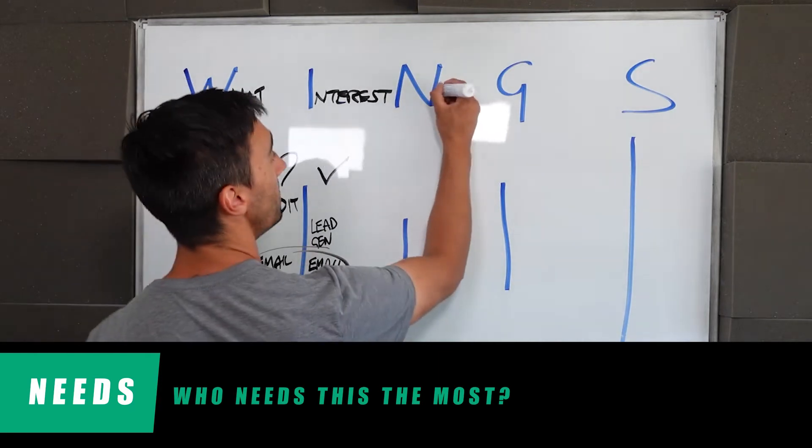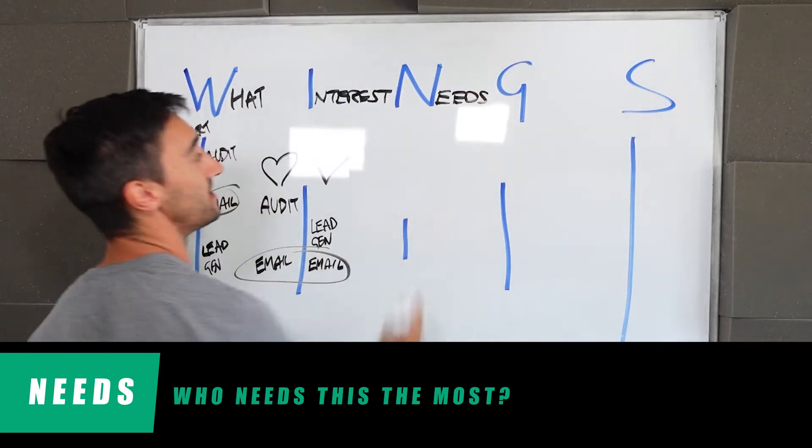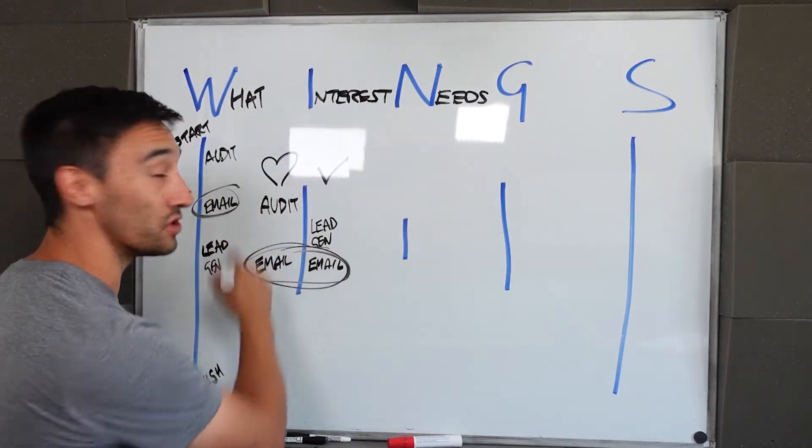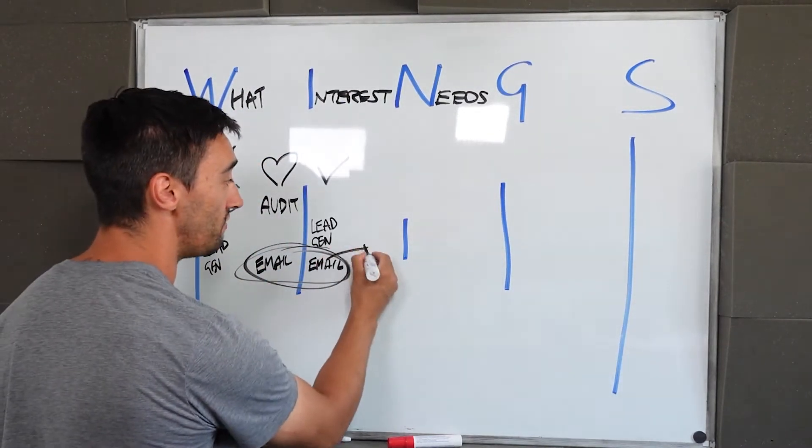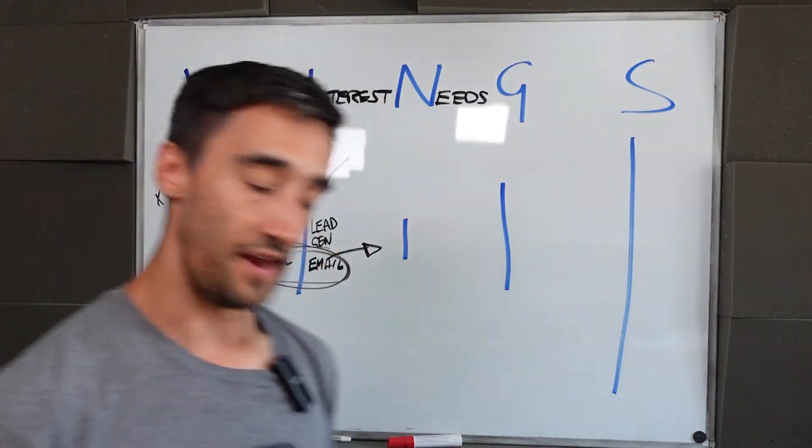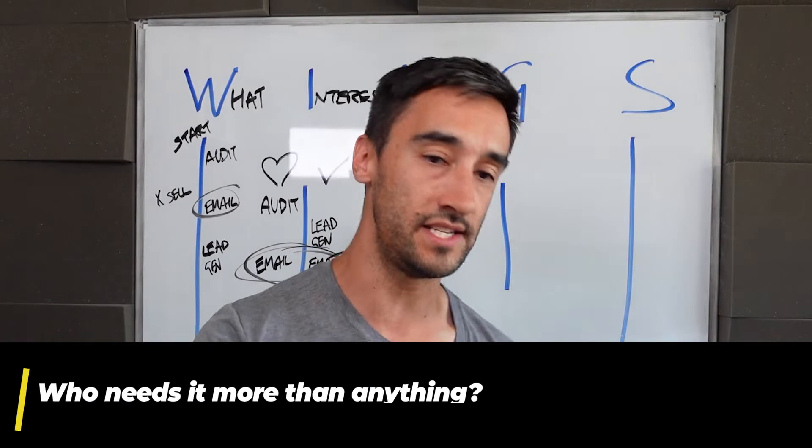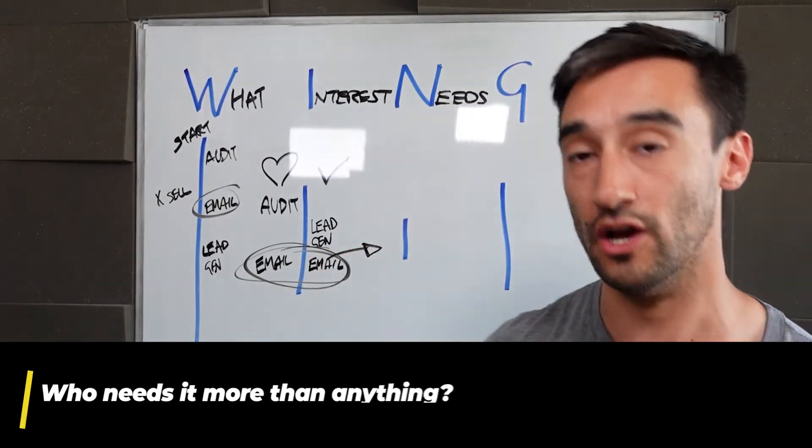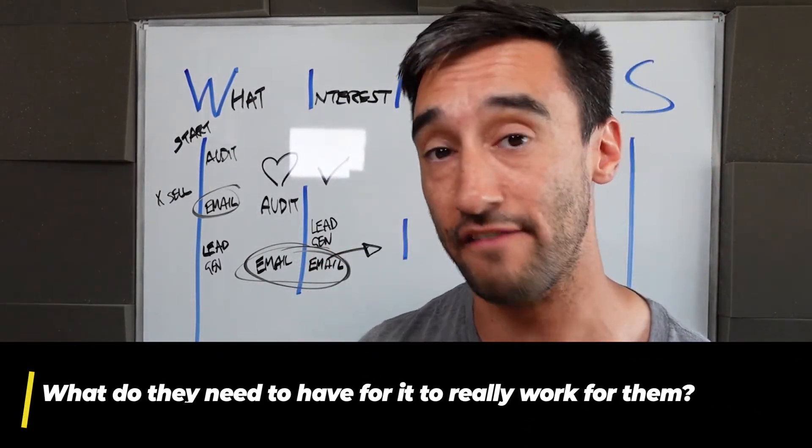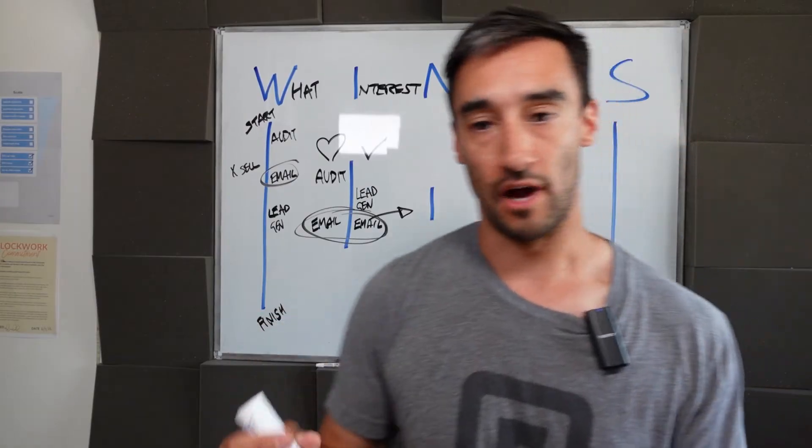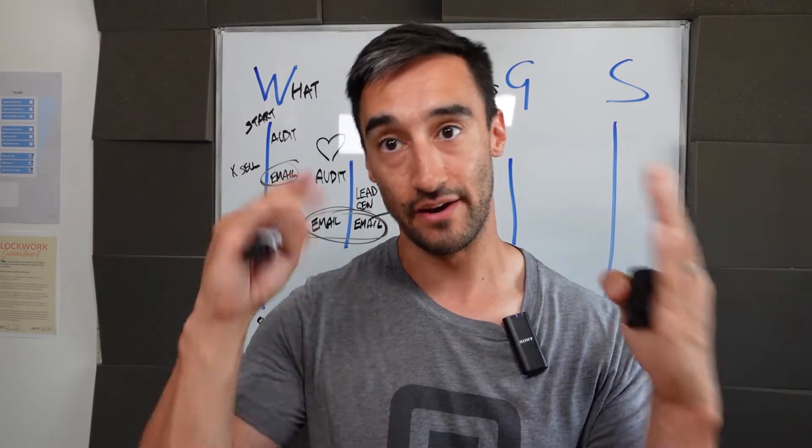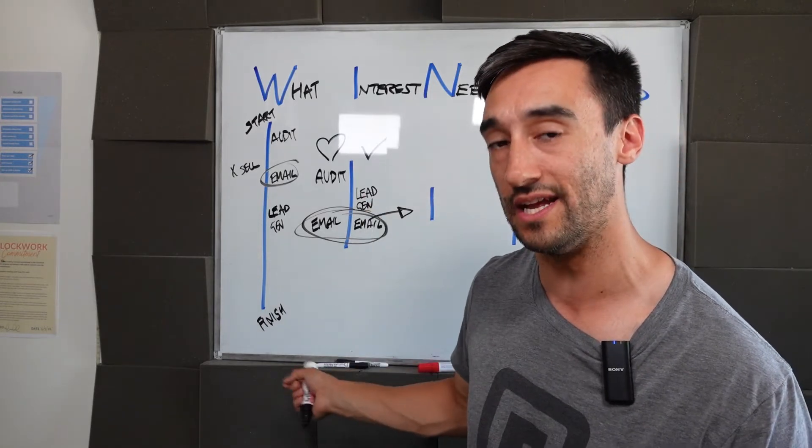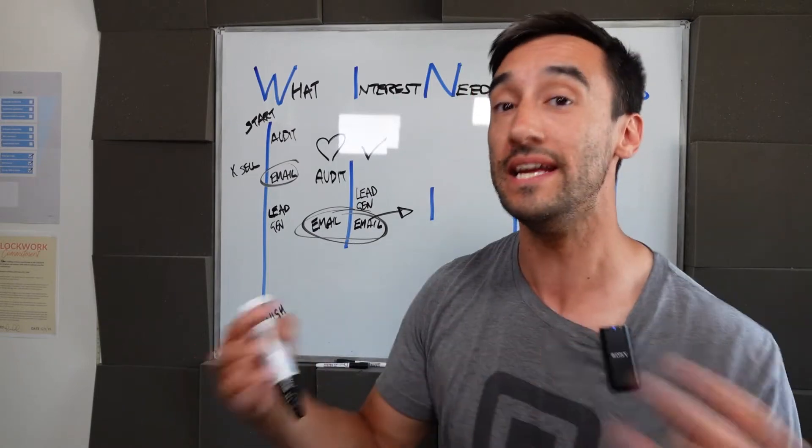This is why it's the shortest, because we're looking at needs. Needs is essentially who needs this the most. I want you to think about if you've got one, maybe you've got two or three inside the interest category, you can now move this over to the needs section. The question you need to answer is who needs email marketing or whatever it is that you've highlighted that both is love and good at, who needs this more than anything? What do they also need to have in order for email marketing to really work for them?